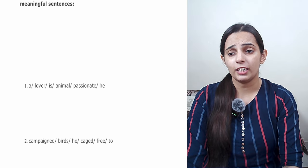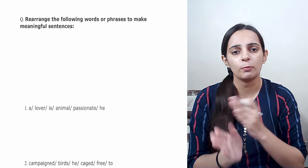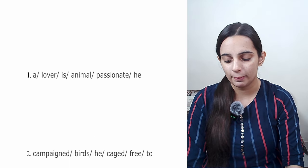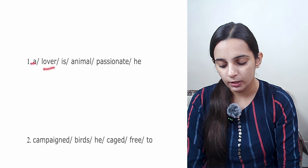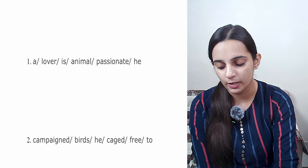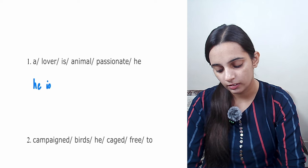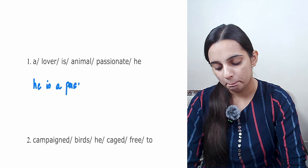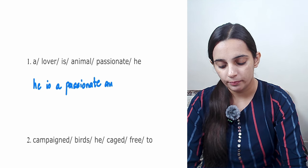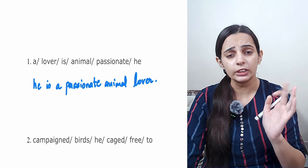In reordering or rearranging, some words you have to give them simple sentence. So here there is an example, look: 'a lover is animal passionate he'. This is 'he is a passionate animal lover'. Okay, this was easy.